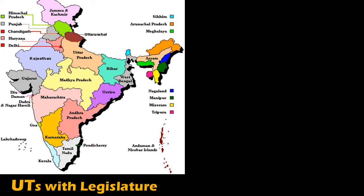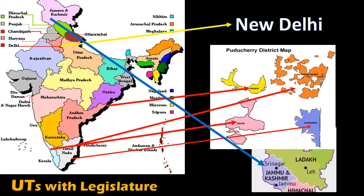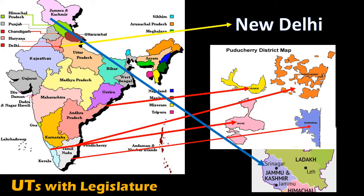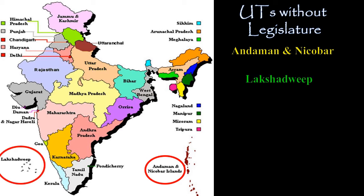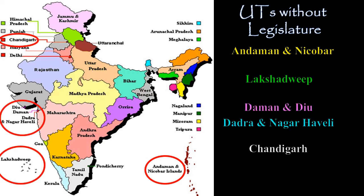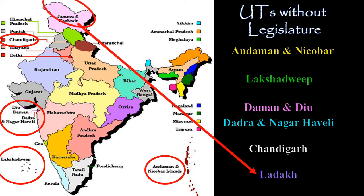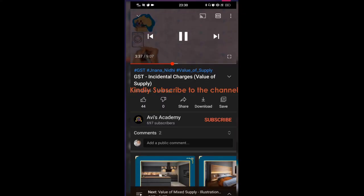Union territories with legislature — like New Delhi, Puducherry, and Jammu and Kashmir — are considered as states under the GST act, and hence for within-state transactions, they charge SGST and collect the tax. On the other hand, all remaining union territories — Andaman and Nicobar Islands, Lakshadweep, Daman and Diu, Dadra and Nagar Haveli, Chandigarh, and the newly formed Ladakh — charge UTGST for within-state transactions. This is how GST is applied in the country.